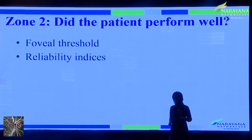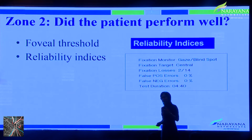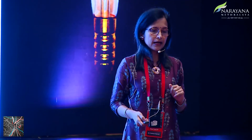Before reading a printout, we need to know whether the patient has performed well. There are certain things in the printout that tell you whether the test was performed well. First and foremost is the foveal threshold — as the test begins, the first thing checked is the foveal threshold, and unless it is checked correctly, we cannot look at the field further. We also look at reliability indices in Zone 2: fixation monitor, fixation target, fixation losses, false positives, false negatives, and the gaze track.